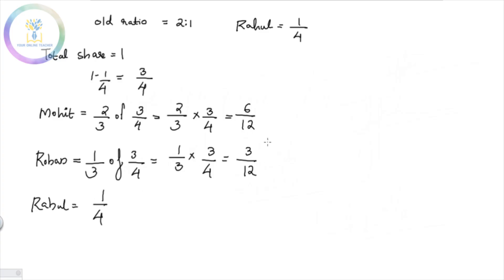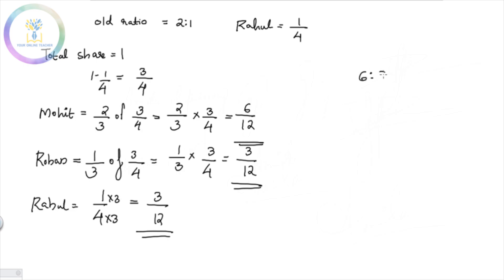The common denominator is 12. So the new ratio is 6:3:3, which simplifies by dividing by 3 to give a new profit-sharing ratio of 2:1:1 for Mohith, Rohan, and Rahul respectively.